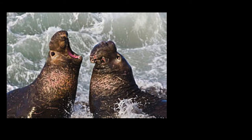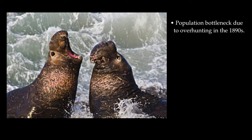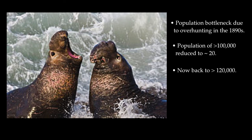Northern elephant seals have reduced genetic variation probably because of a population bottleneck humans inflicted on them in the 1890s. Hunting reduced their population size from over 100,000 to as few as 20 individuals by some counts. Once hunting was prohibited, the population slowly increased again and is now at about 127,000. However, the population bottleneck they went through has significantly reduced genetic variation from the original population, since every one of those 127,000 seals is a descendant from a group of 20 seals.